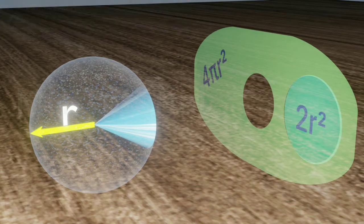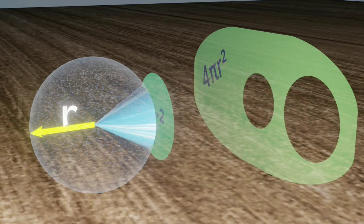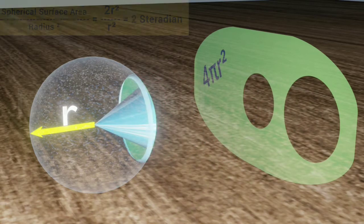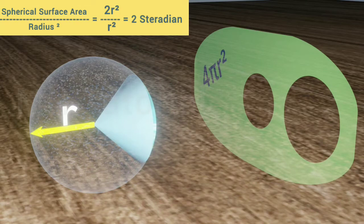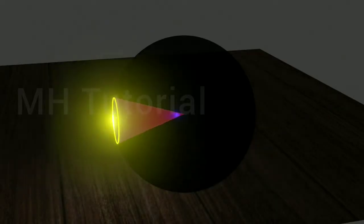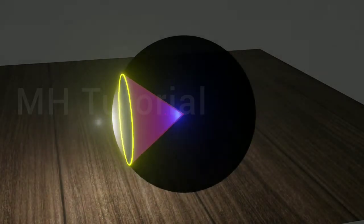If you take another portion of spherical surface of area 2R², then it will form a 2 steradian size solid angle. More you increase the surface area, larger the angle you should get from it.